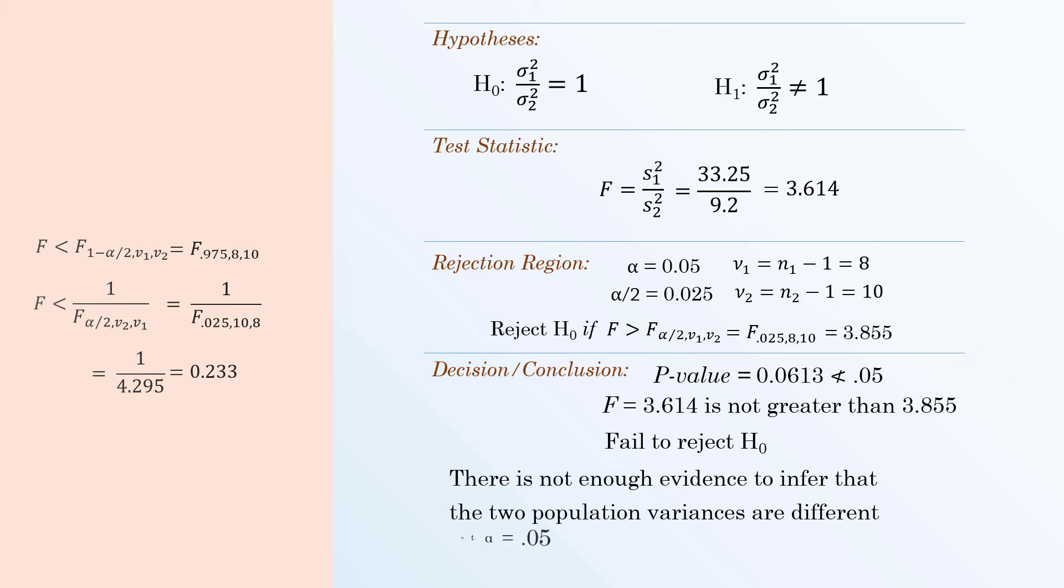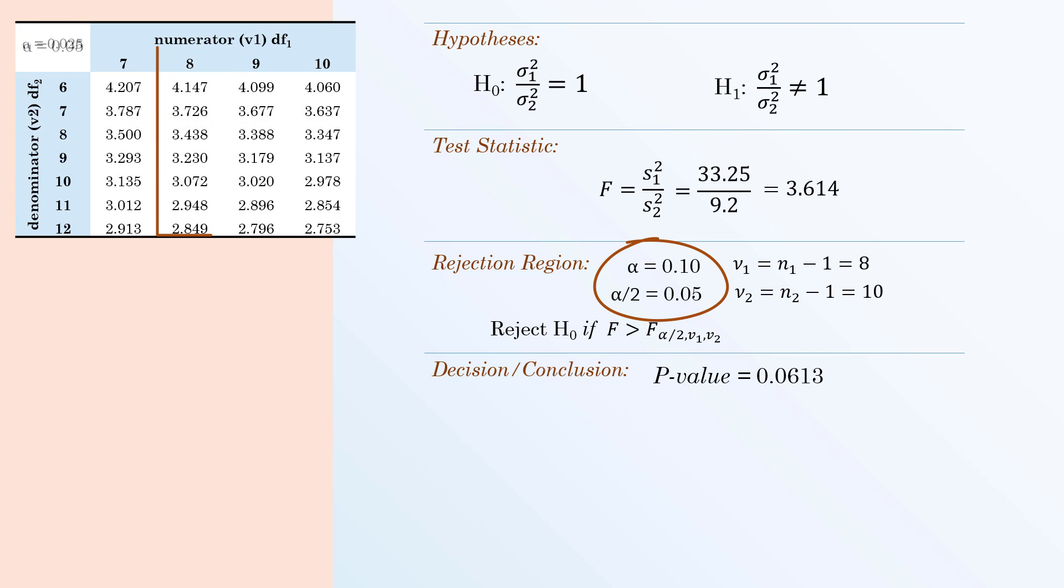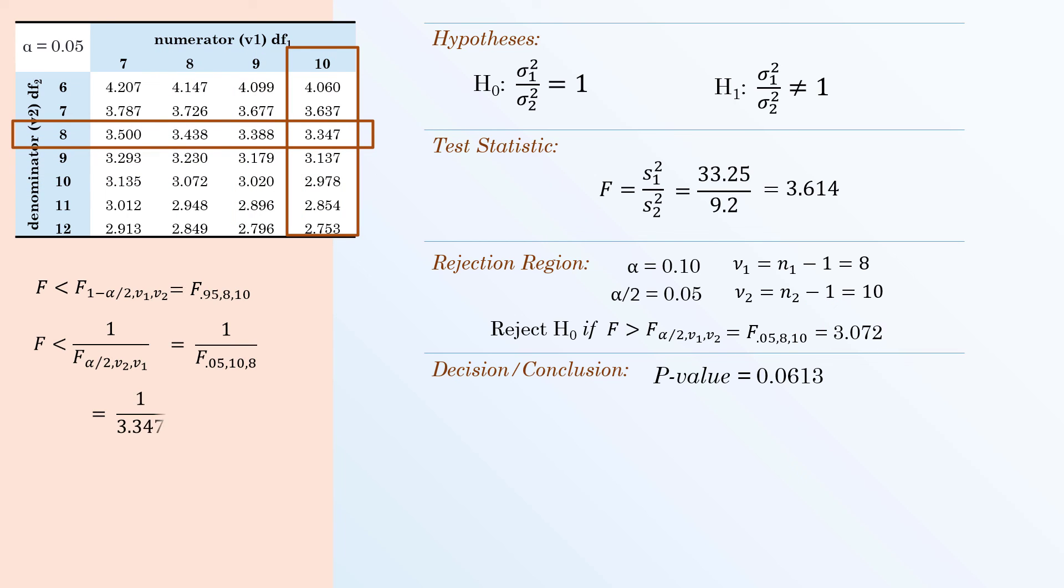Note that if we use an alpha of 0.10 instead, the right-tailed F-critical value will be 3.072. The left-tailed critical value will be 0.299.